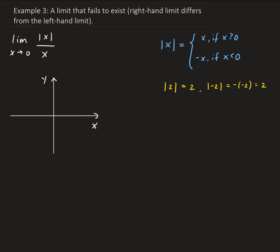In both cases, that tells you how many units it is from 0. We can use this information to graph the function. Let's break this down by case. When x is strictly bigger than 0, our function — which is the absolute value of x divided by x — becomes x over x, which gives us 1.